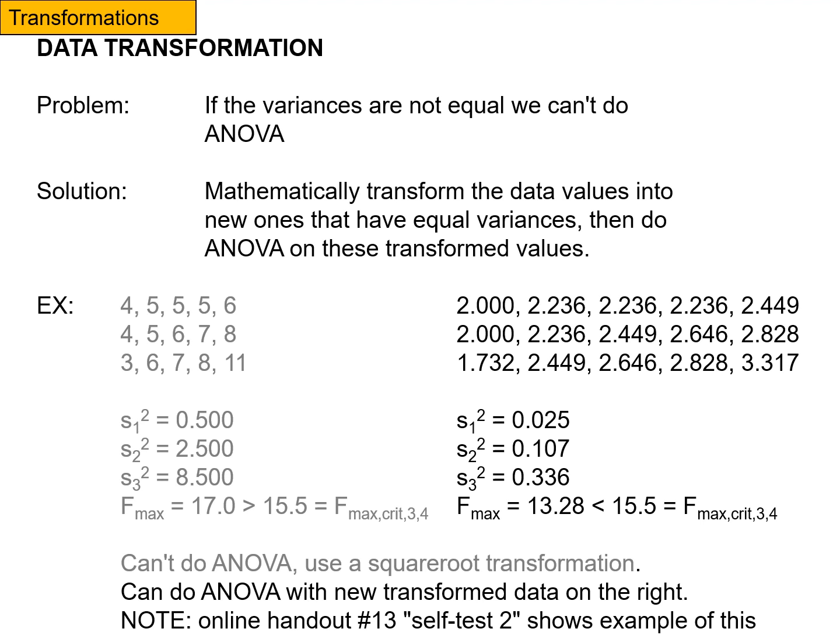Now the data here shown is the square root transformed values. So the 4 became a 2, the 5 became a 2.236, et cetera, all the way through to the 11 becoming a 3.317.